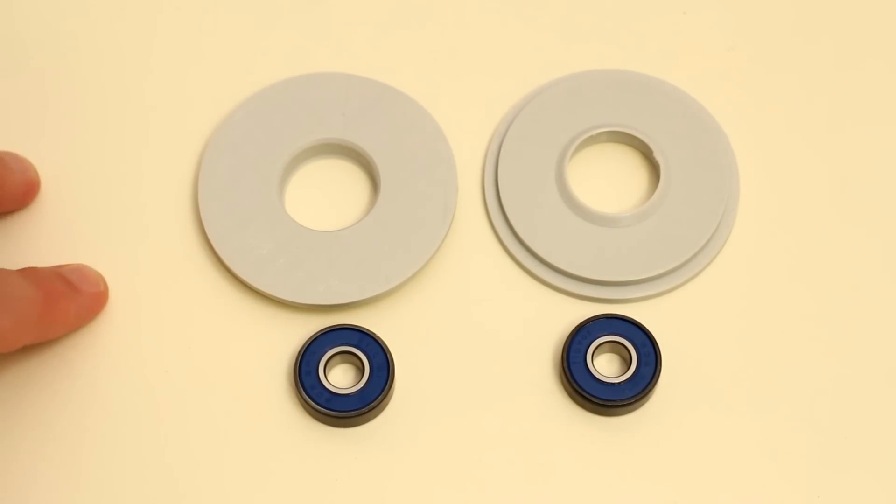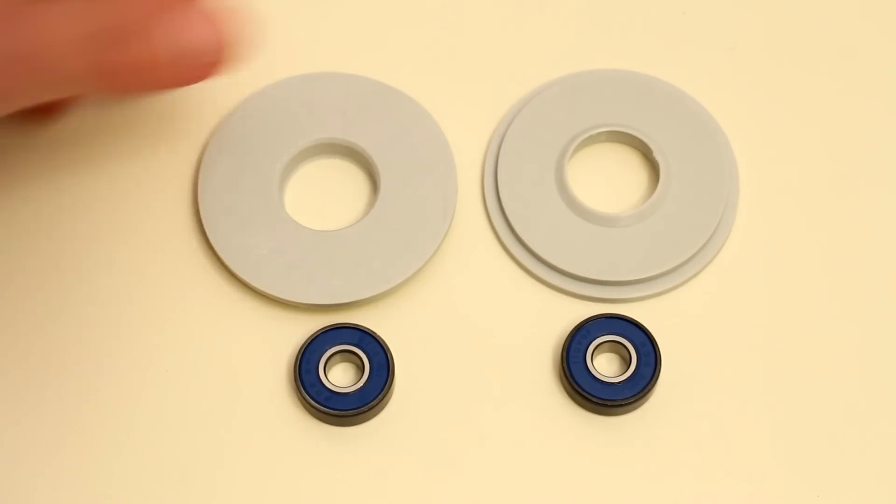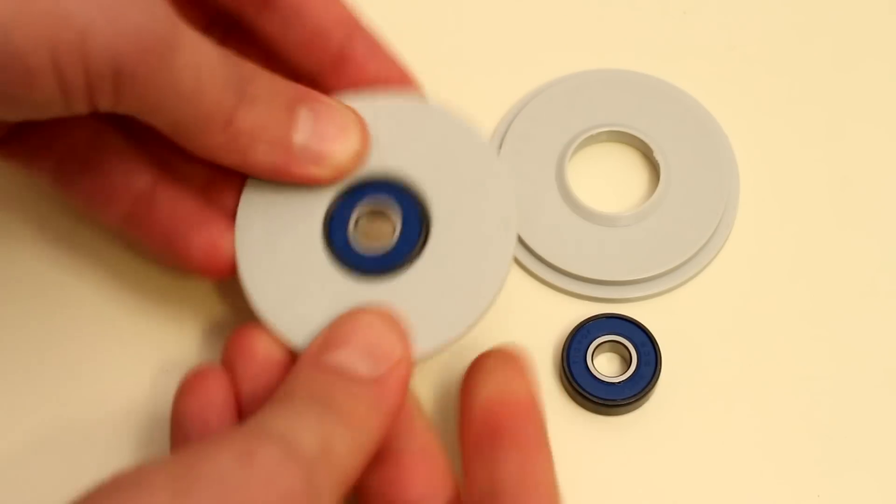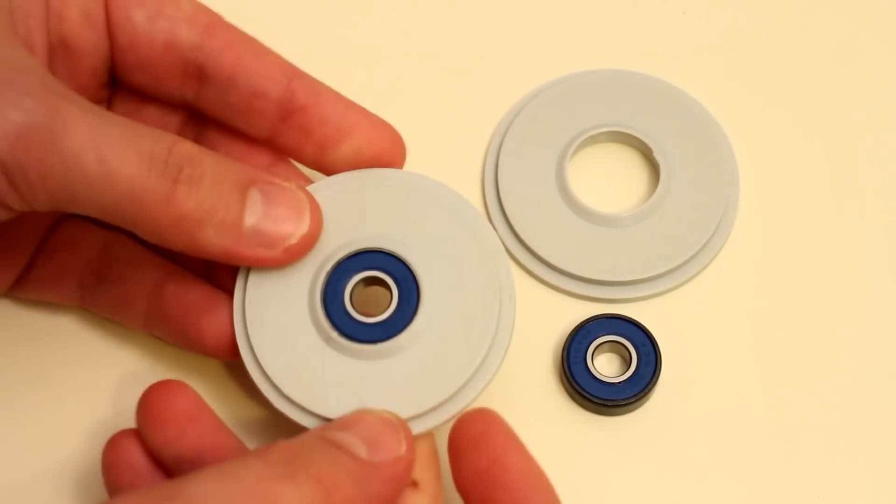So I've gone ahead and I've knocked up something more standard that I'll be switching over to. These new holders can accept stock standard skate bearings. So these are 608 bearings. Simply push the bearing in like so and that locks in place.